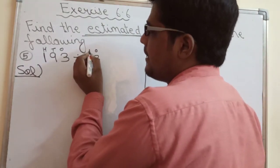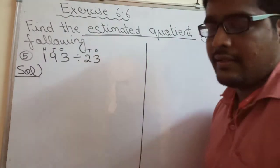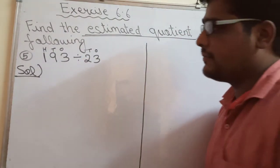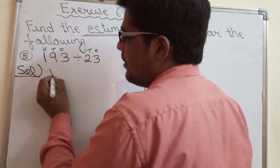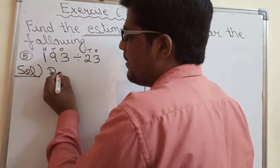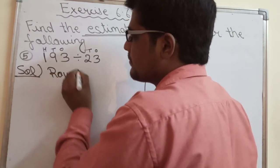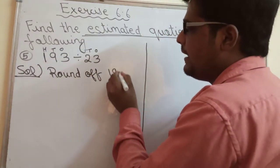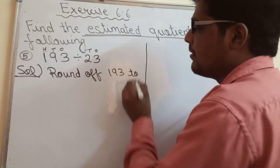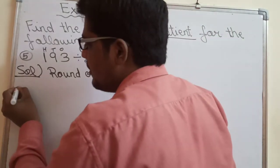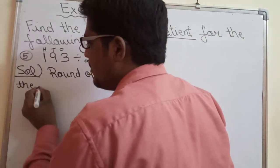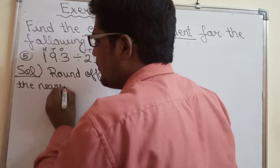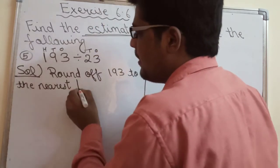Divisor may do digit hai, there are two digits, so we will round this off to nearest tens. So first I am writing round off 193 to the nearest hundred.